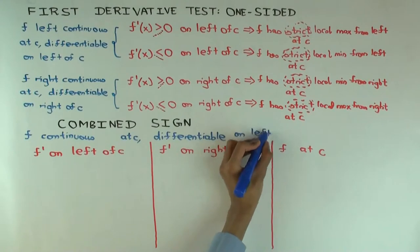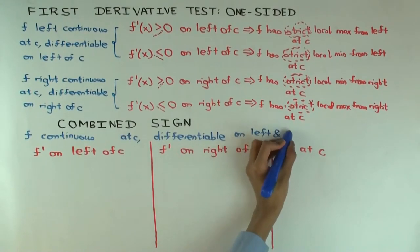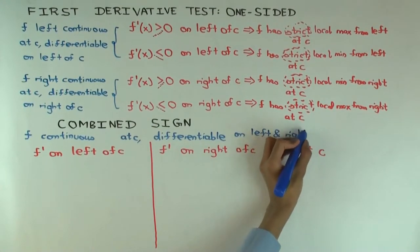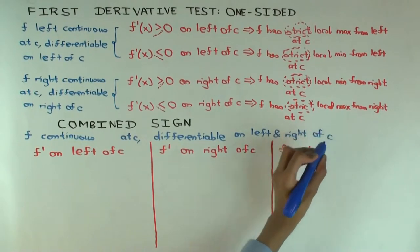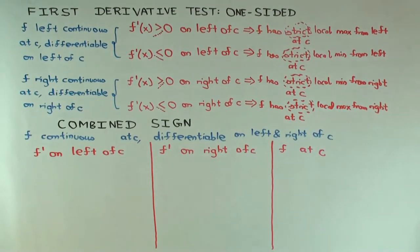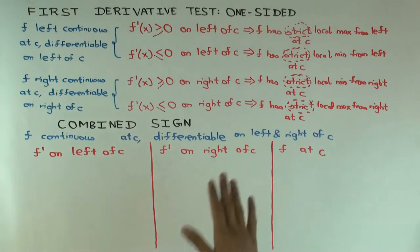Okay, by the way, what am I assuming about the derivative of f at c? Nothing. I'm not assuming anything about whether f is differentiable at c. I'm assuming, however, that f is differentiable on the immediate left and the immediate right of c.